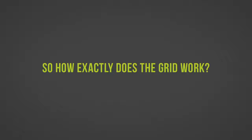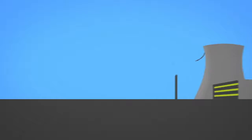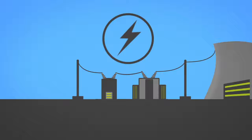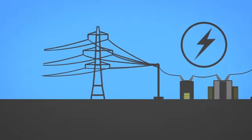So how exactly does the grid work? After electricity is generated, the voltage is stepped up at a substation. This voltage increase allows electricity to travel long distances while minimizing the amount of electricity lost.